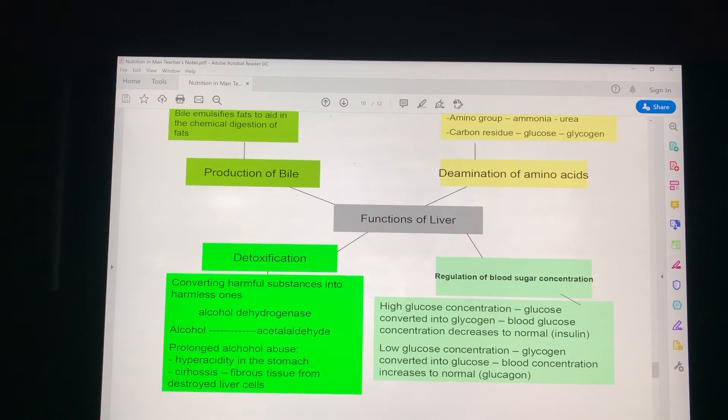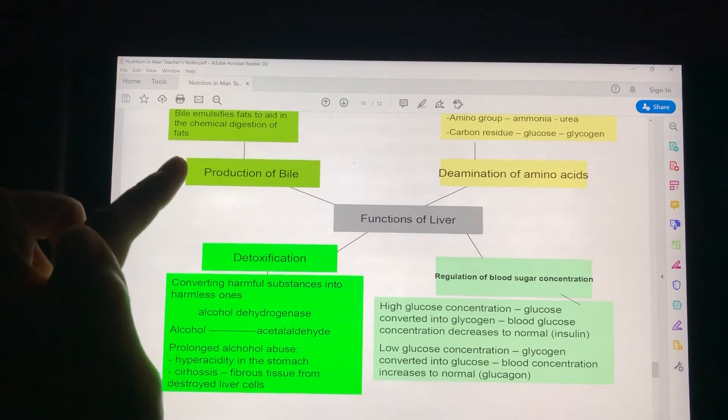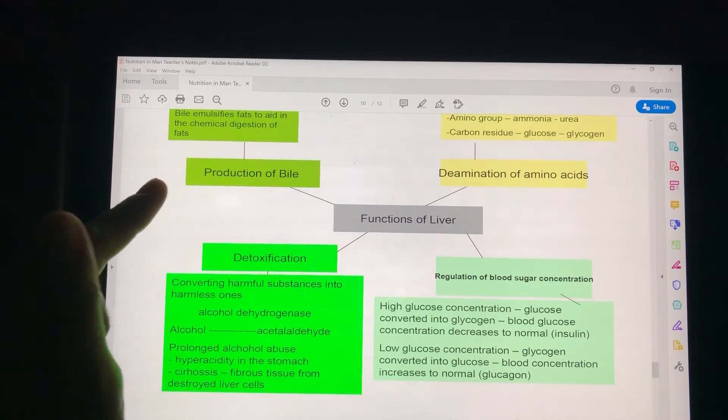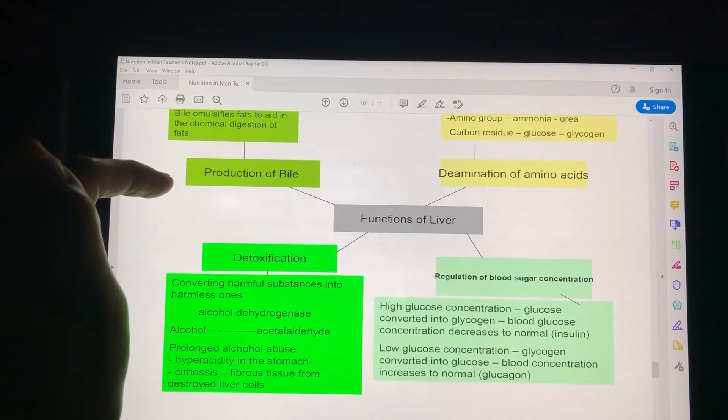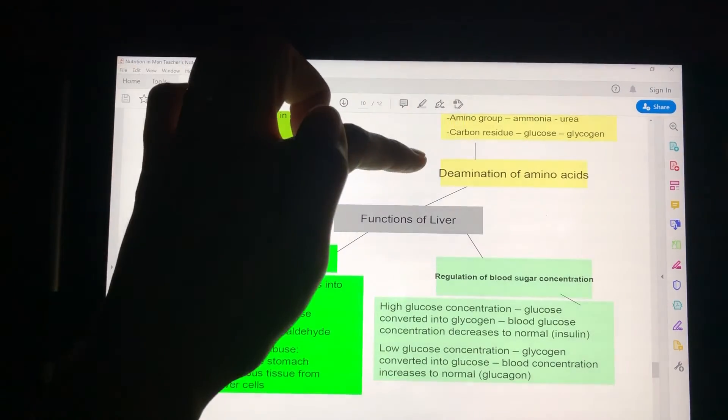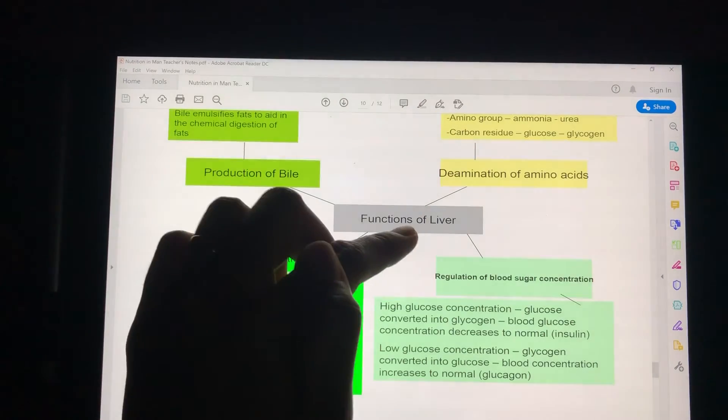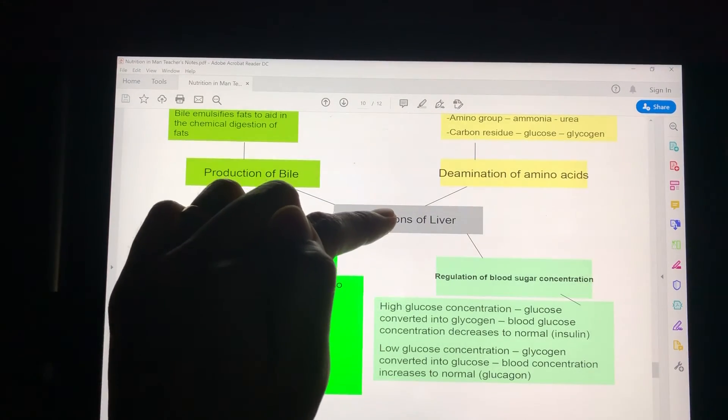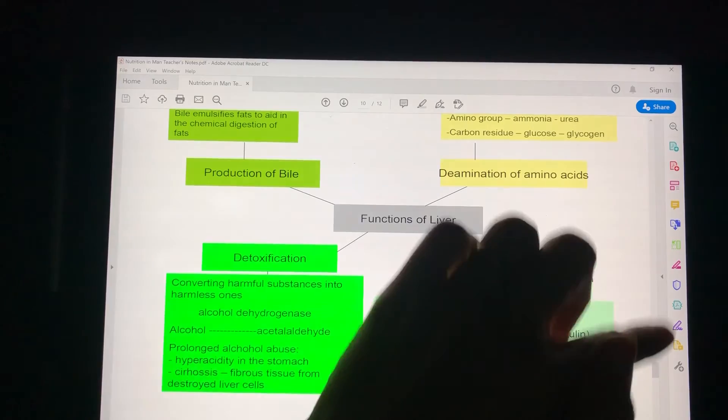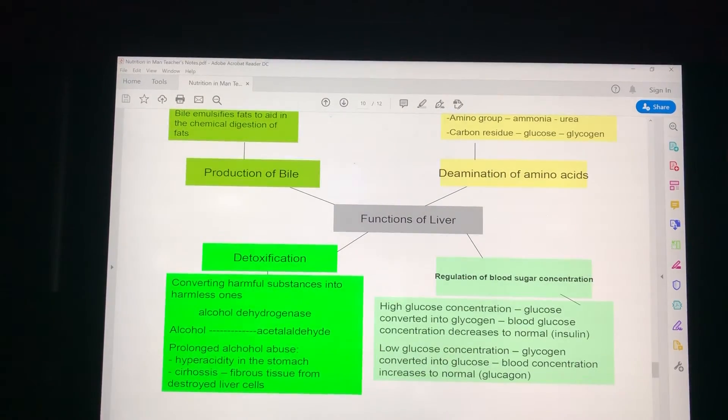It is just an extension of the chapter and a recollection of what I've mentioned about the liver producing bile, the liver deaminating amino acids, the liver converting excess glucose into glycogen, and its added function for detoxification.